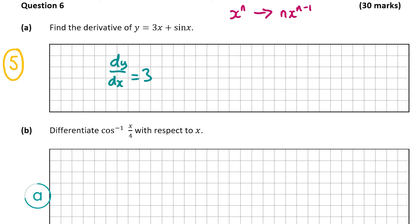Differentiating sine x gives cos x, so the answer is dy/dx is equal to 3 plus cos x. These formulas are on page 25 of the formula tables book, so if you don't remember them you can look there. That's our answer for part a.